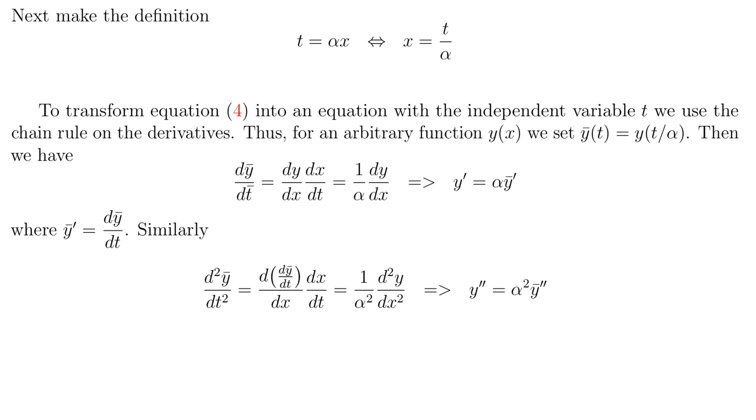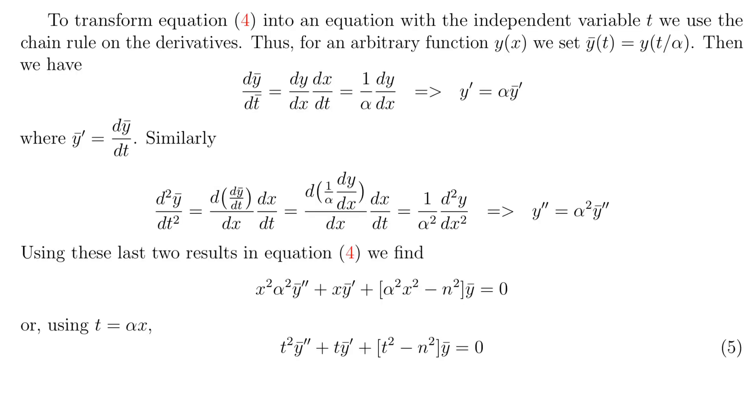We're going to use both of these to transform the differential equation. When we use them in equation 4, we end up with the equation second from the bottom of the screen here, and we notice that since t equals alpha x, this equation rewrites as equation 5, which we recognize as Bessel's equation of order n without the parameter.